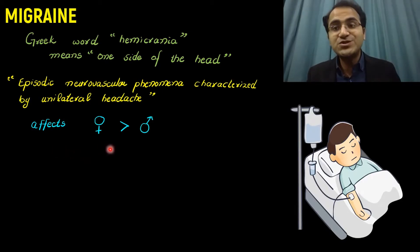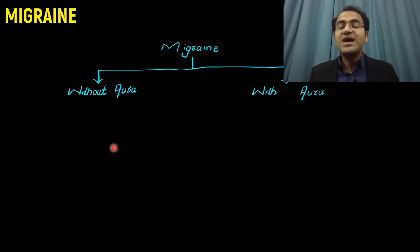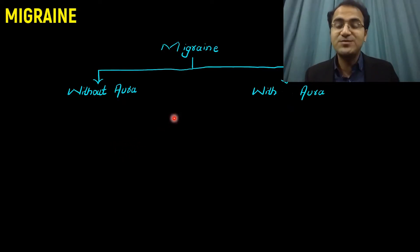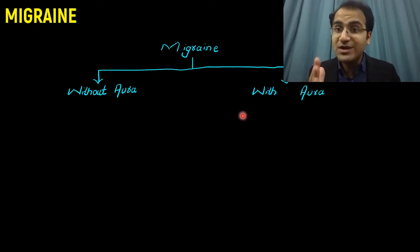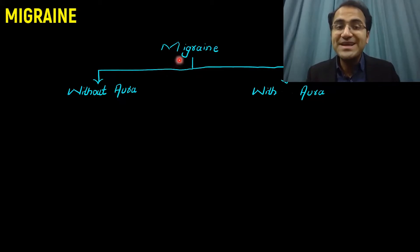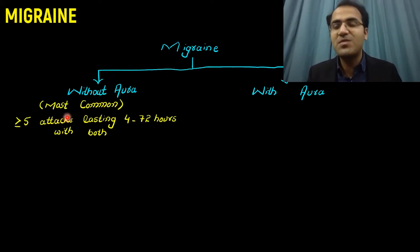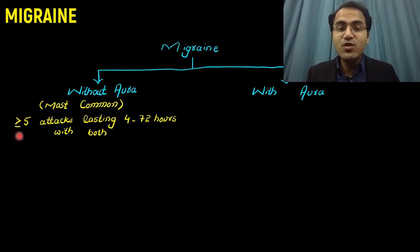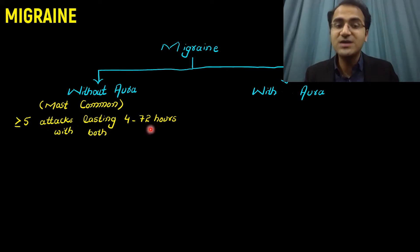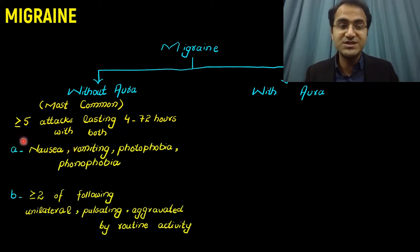It affects females much more than males. Migraine headaches have two types: migraine without aura and migraine with aura. Migraine without aura is the most common type of migraine headache. It is defined as greater than or equal to five attacks lasting four to 72 hours with both of the following features in A and B.